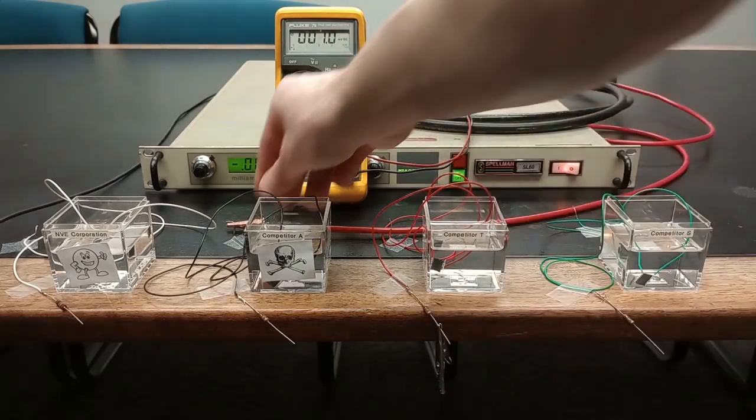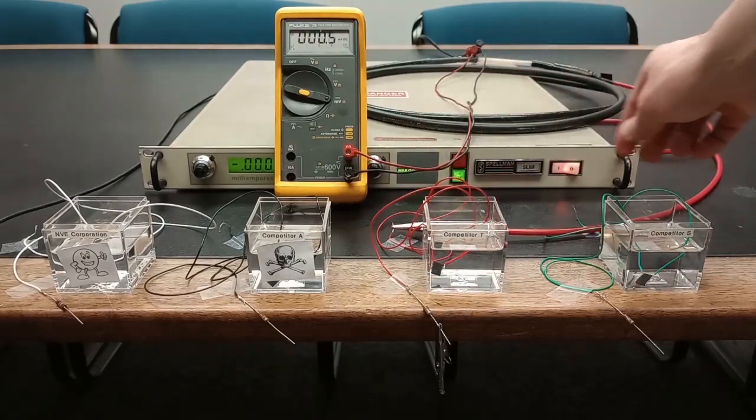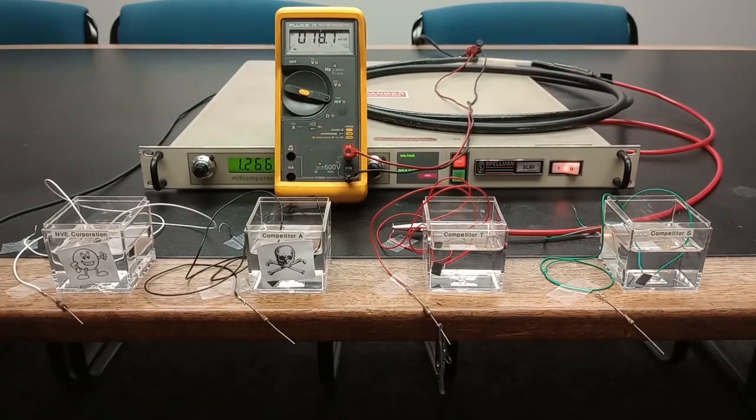Unfortunately competitor T doesn't fare much better with visible arcing across the resistor. That means the isolation barrier of the isolator failed and the high voltage is showing up at the resistor terminals showing the safety has also failed.